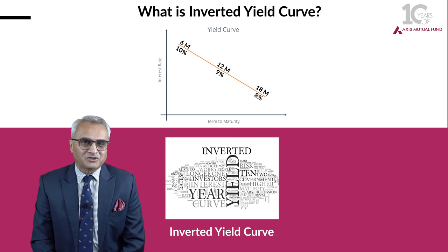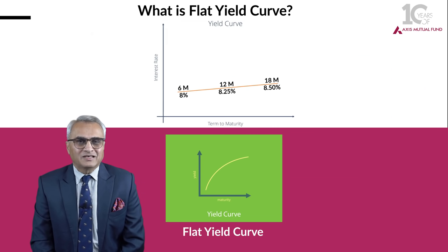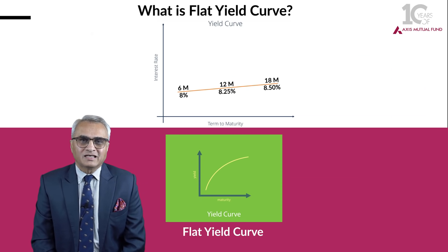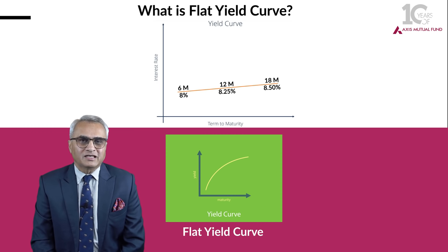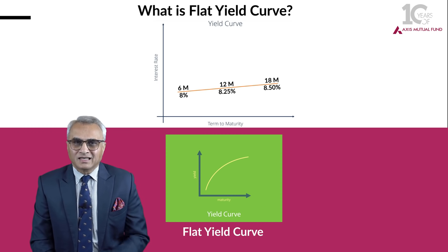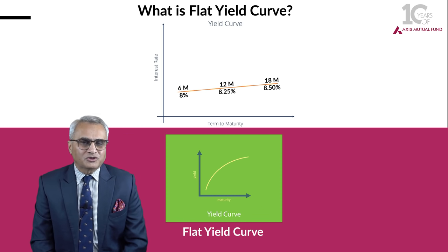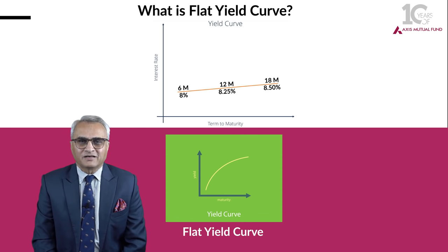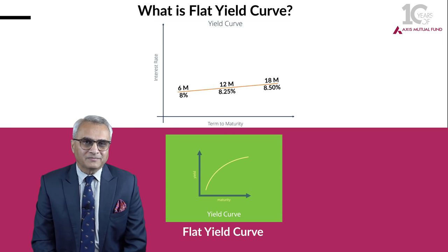What is a flat yield curve? A flat yield curve is when the borrower is willing to pay something similar for short dated maturity to long dated maturity. In this example, as shown, 8%, 8.25%, or 8.5% for 6-month, 12-month, or 18-month paper respectively.